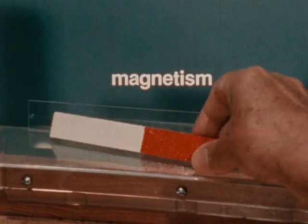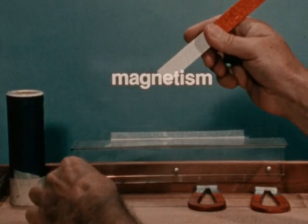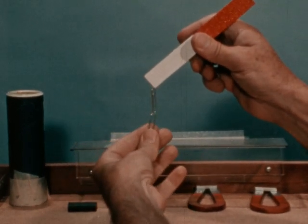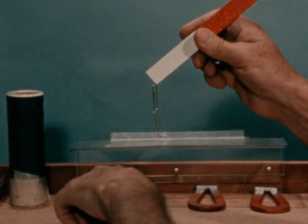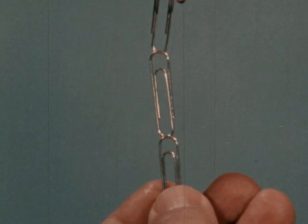For example, magnetism is related to electricity. You've probably used a magnet to do things like this. The metal clips are attracted to the magnet.